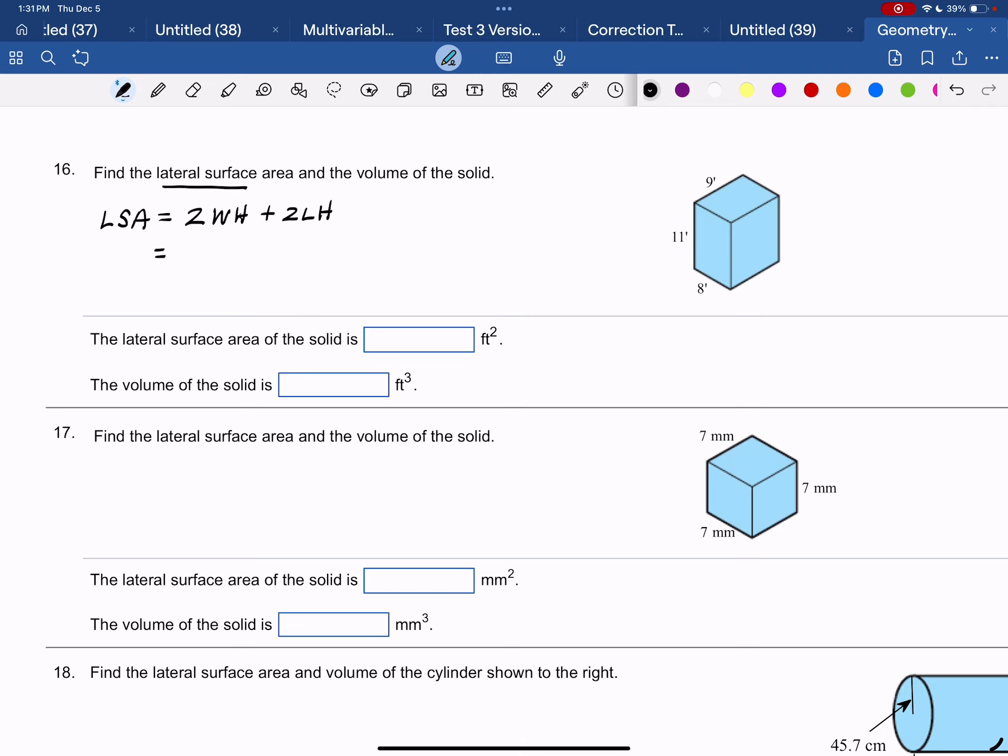So here we have a height of 11, a width of 8, and a length of 9. And technically it doesn't matter if you mix up the width and the length. You can call the length 8 and the width 9, it's going to come out the same.